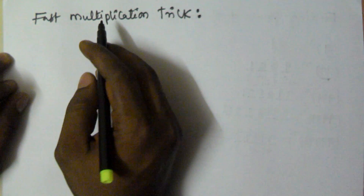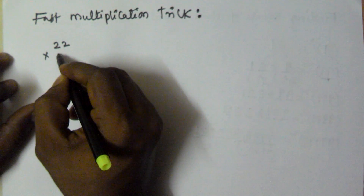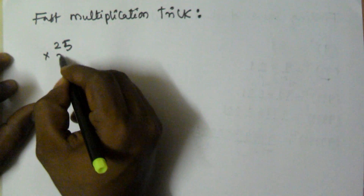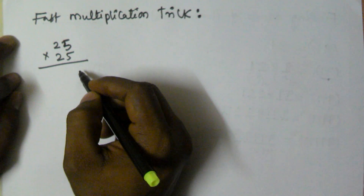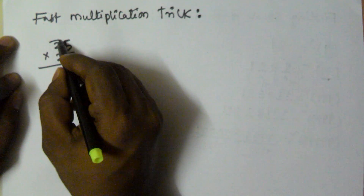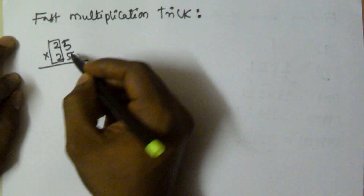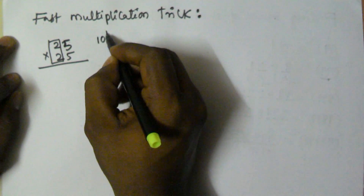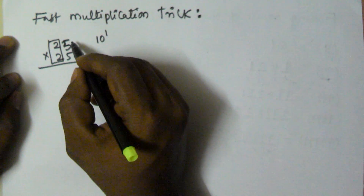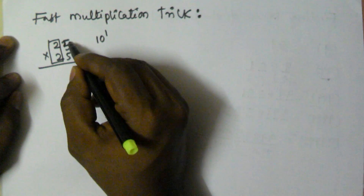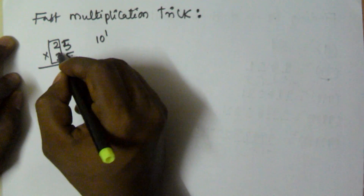First I'll show one example: 25 into 25 — how to find the value. Here the leftmost digits are the same: 2 and 2, and the sum of the rightmost digits is 5 plus 5 equals 10, which is 10 to the power of 1. So the trick is we multiply the rightmost digits: 5 into 5 gives 25.